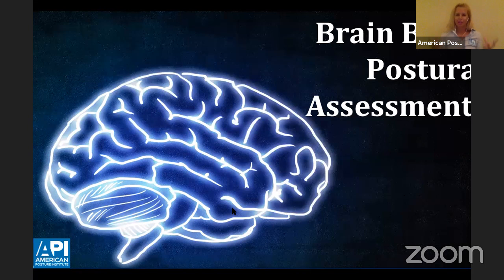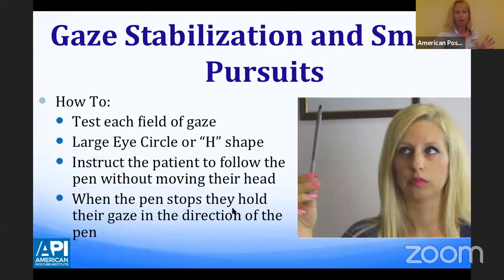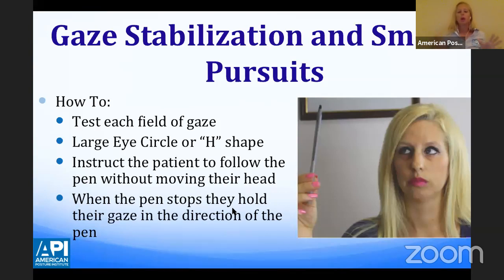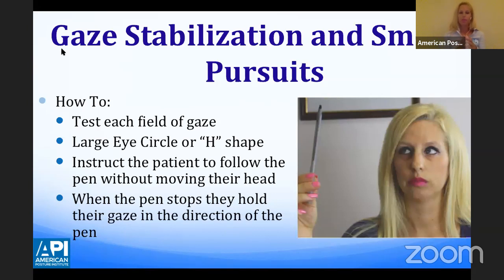Let's talk about clinical application — brain-based postural assessments. I want to give you three brain-based postural assessments you can implement right away that do not require any special equipment. The first assessment is gaze stabilization and smooth pursuits for the visual system. With just a pen tip or your finger, you can test each of the fields of gaze by doing a large circle or H shape, bringing the target into each field of gaze.